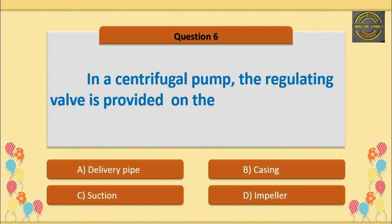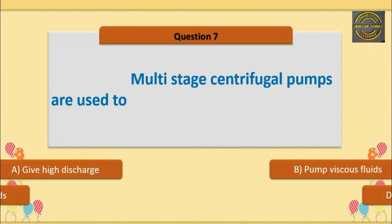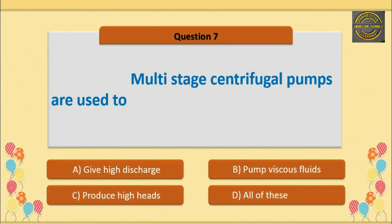Q6. In a centrifugal pump, the regulating valve is provided on the — option A is correct — delivery pipe. Q7. Multi-stage centrifugal pumps are used to — option C is correct — produce high heads.